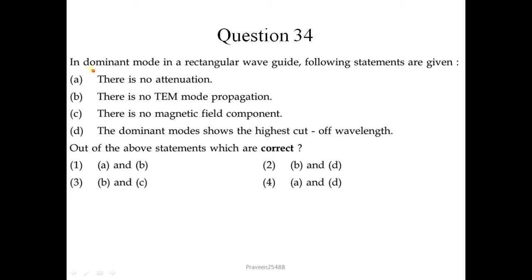Question number 34: in dominant mode in a rectangular waveguide. There is no attenuation — this is not correct; there is attenuation. There is no TEM mode propagation — this is correct. There is no magnetic field component — this is incorrect. The dominant mode shows the highest cutoff wavelength and lowest cutoff frequency — this is correct. So B and D are correct; option 2 is the answer.